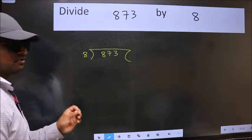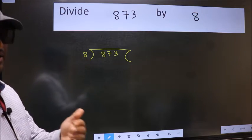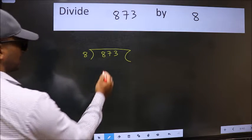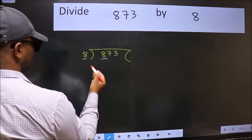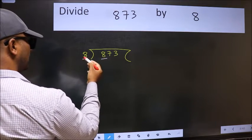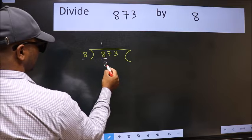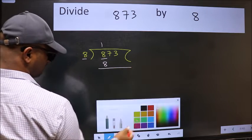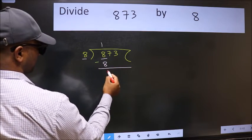This is your step 1. Next, here we have 8 and here 8. When do we get 8 in 8 table? 8 once 8. Now we should subtract. We get 0.